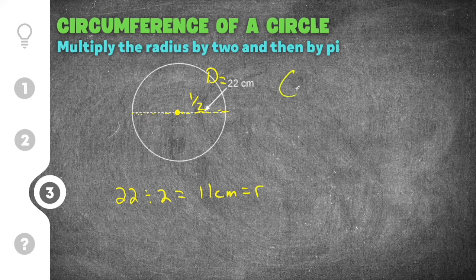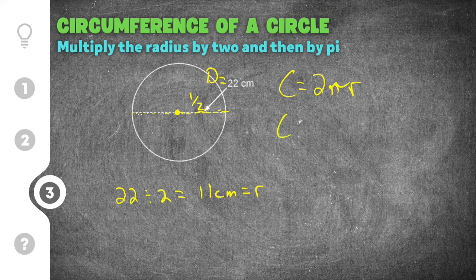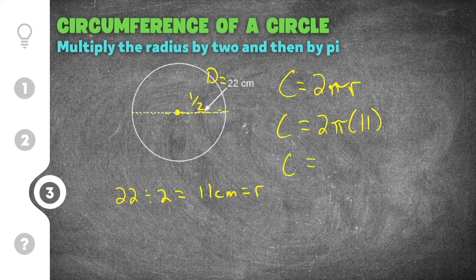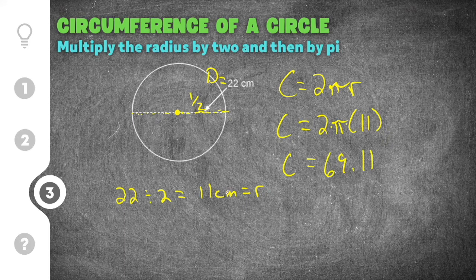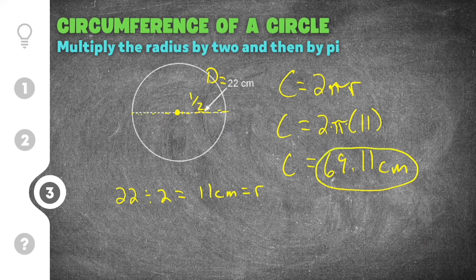I go back to the circumference of a circle formula: circumference equals two times pi times r. I substitute 11 in for r, then go to my calculator and type in two times pi times eleven, and I get 69.11. Our units are centimeters, so the circumference of this circle is 69.11 centimeters.